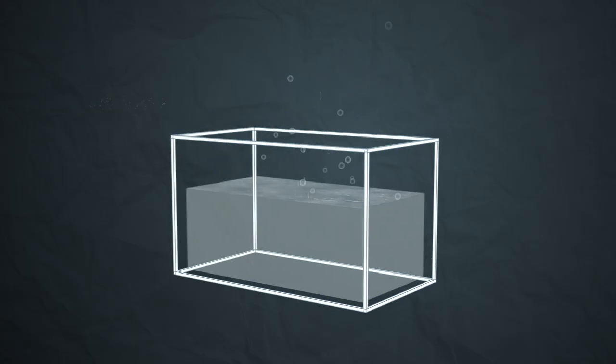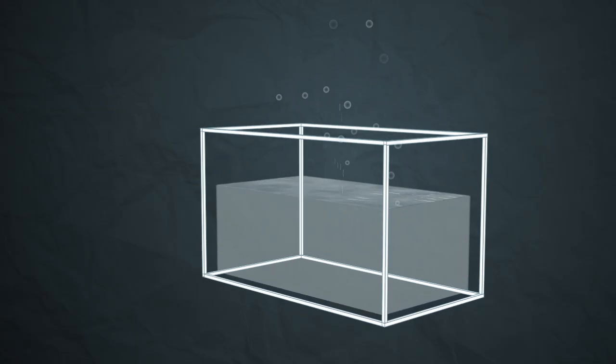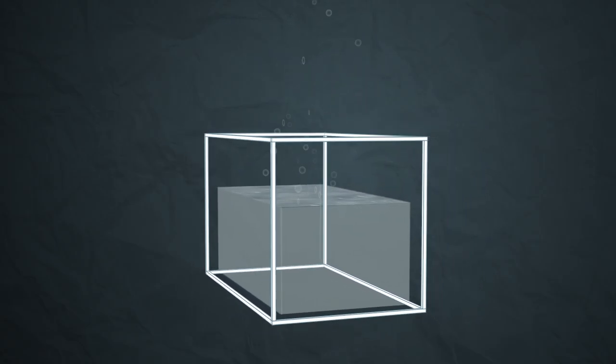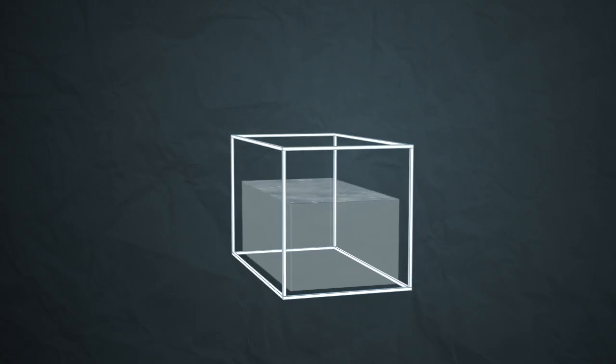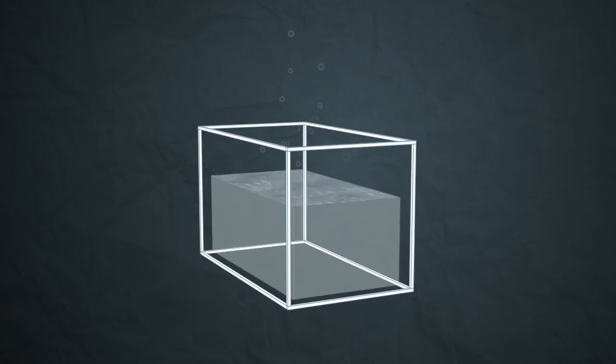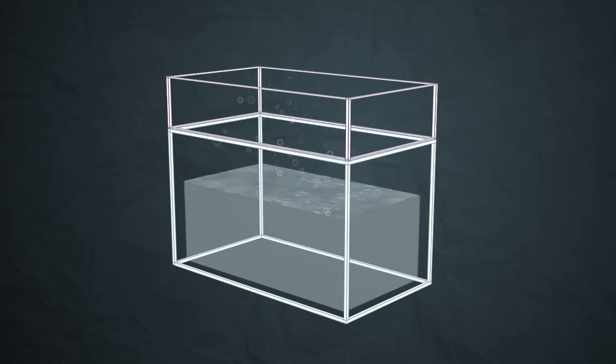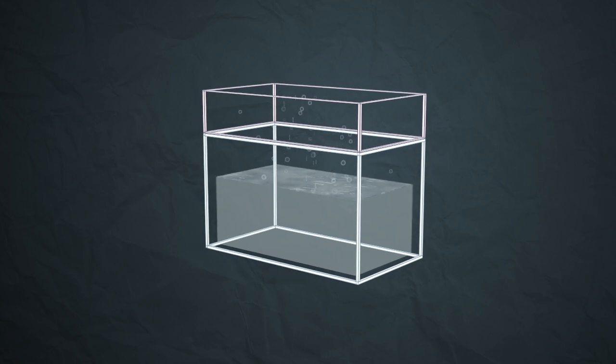So as that builds up, what's going to happen is these particles floating above the water can go back into the water unless they're whisked away. So if you put a lid on the container, all the particles are trapped so the water starts going back into the water phase.